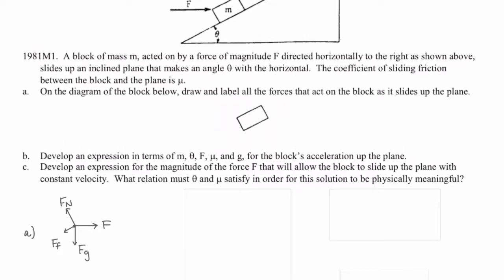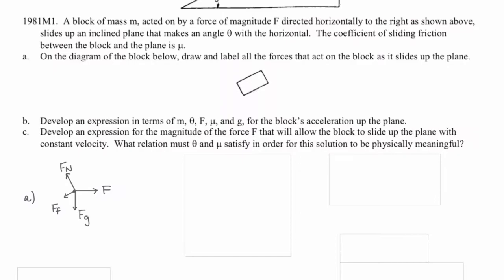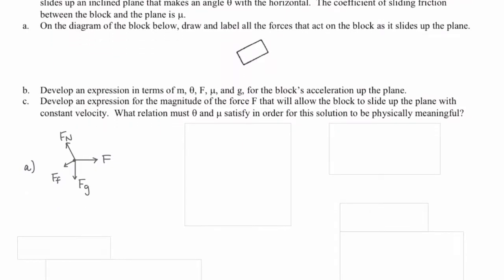The force of friction is going to point in the direction down the incline because that's the direction opposite of motion, which is up the incline. The normal force is going to be perpendicular to the incline, and like always, gravity is pointing straight downwards.